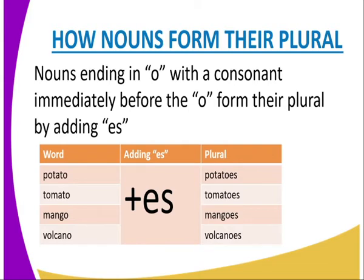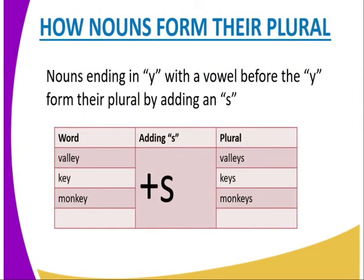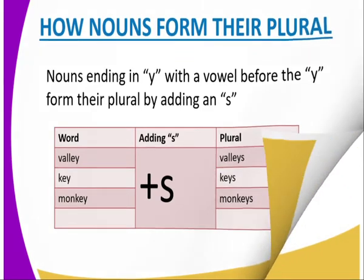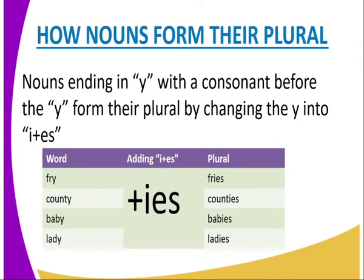Nouns ending in -Y with a vowel before the Y form their plural by adding S. For example, 'valley' — the Y is preceded by the vowel E — so we get 'valleys'. Other examples: key to keys, monkey to monkeys.